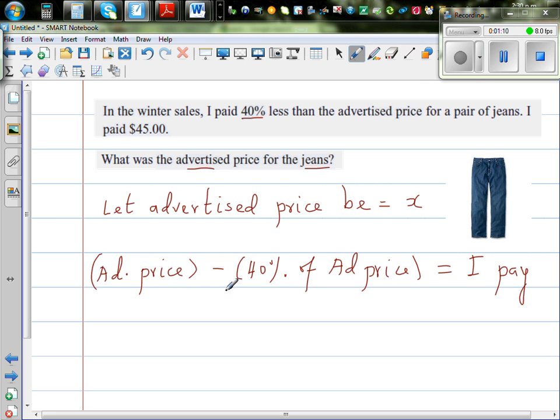This whole thing has been written as an equation. So this is advertised price. You take up 40% of the advertised price and then this is what you get.